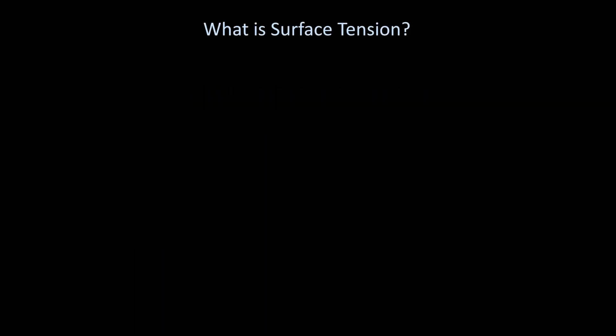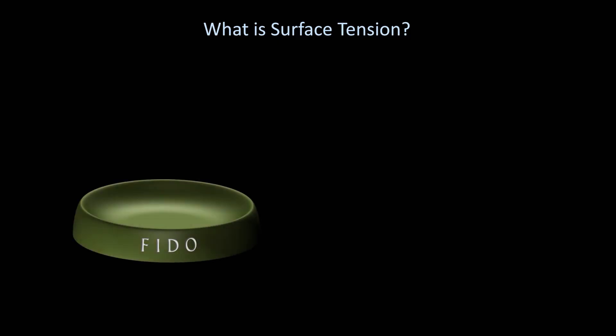Whether or not we realize it, we see examples of surface tension every day as it manifests in a wide array of common physical phenomena. One such example is how we can take a bowl, fill it with water, and float a piece of paper on top, despite the paper's density being greater than that of the liquid. Although this would seem to violate the principle of buoyancy as discussed in lesson 2, it's something that everyone has observed at some point.